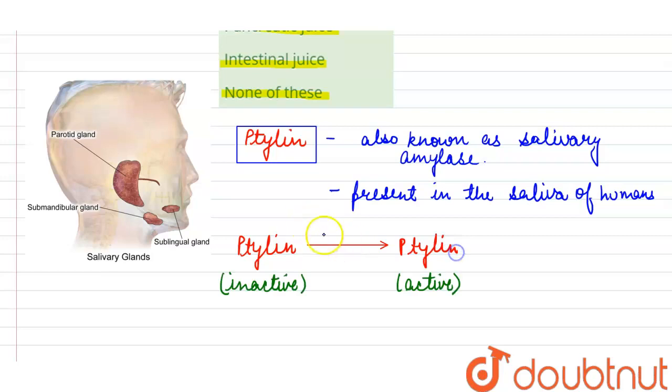And this activated ptyalin acts on the starch present in the food and breaks it down into maltose and limit dextrin.